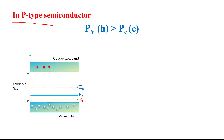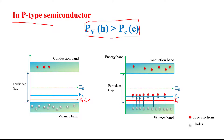We can say that in P-type semiconductor, the probability of holes in the valence band is greater than the probability of electrons in the conduction band. Due to this, the Fermi level exists near the valence band. To make P-type semiconductor material, we add acceptor impurity.